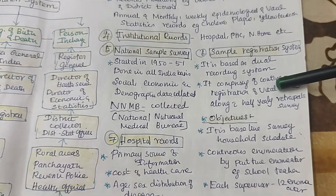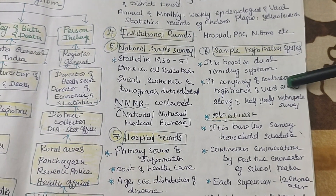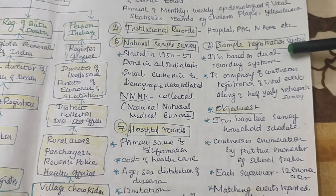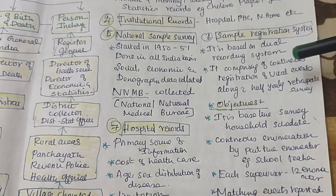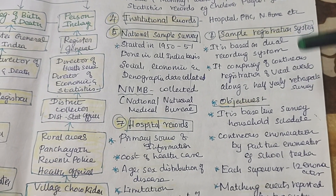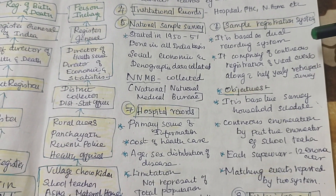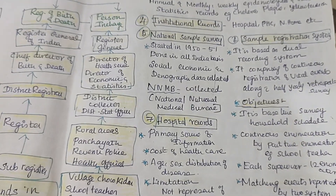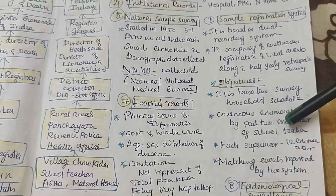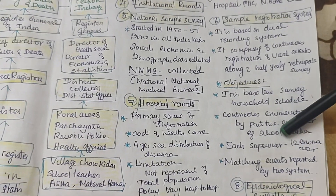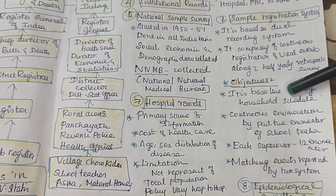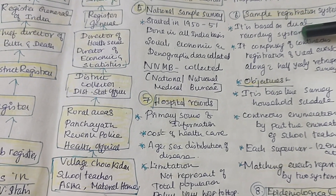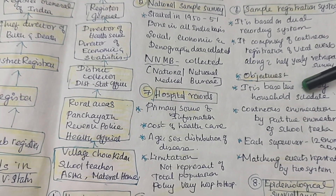Another source is the sample registration system. It is based on a dual recording system — comprising continuous registration of vital events along with a half-yearly survey. Retrospectively they see how much the data matches. School teachers are also mainly used for sample registration.